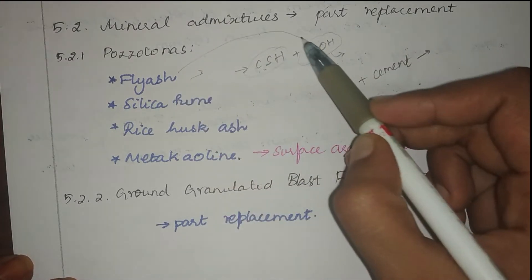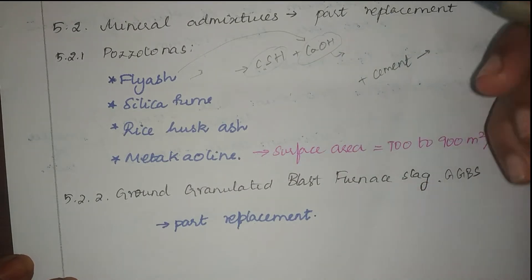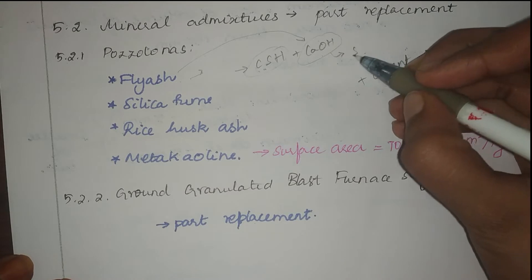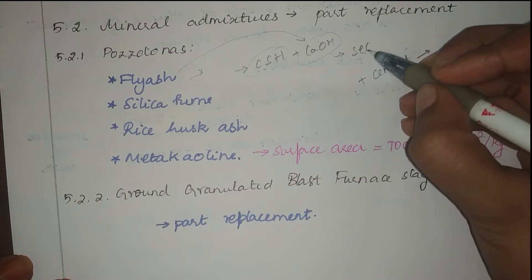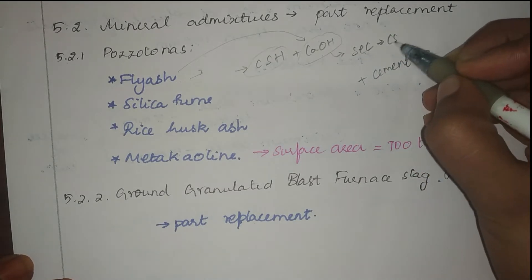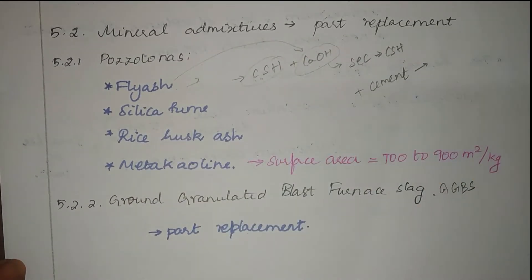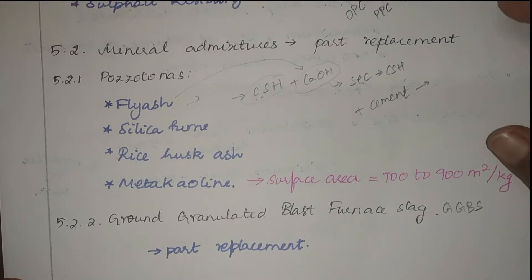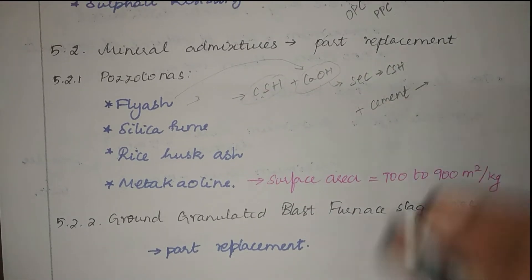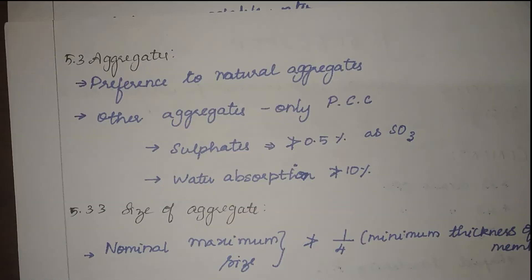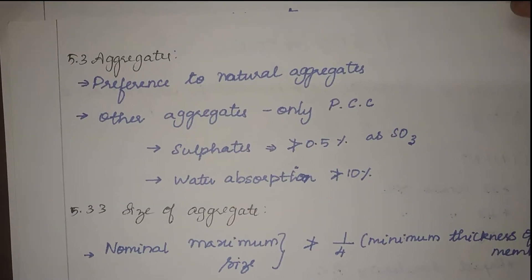When we add fly ash to cement, in the hydration reaction fly ash reacts with CaOH to produce a secondary generation of C-S-H gel. So adding fly ash increases our strength. That is all about mineral admixtures. One important thing to keep in mind: we do not replace cement completely by mineral admixtures — we only do partial replacement.